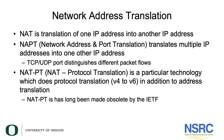Technically, NAT is the translation of one IP address into another IP address, which people usually call static or one-to-one NAT. NAPT is what most people refer to as NAT — it stands for Network Address and Port Translation. Multiple IP addresses are mapped onto one IP address, and the TCP or UDP port distinguishes different packet flows. You have multiple addresses on one side sharing one address on the other, differentiated by the ports being used.